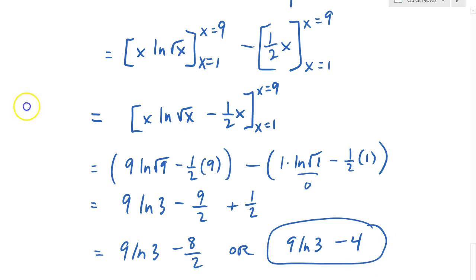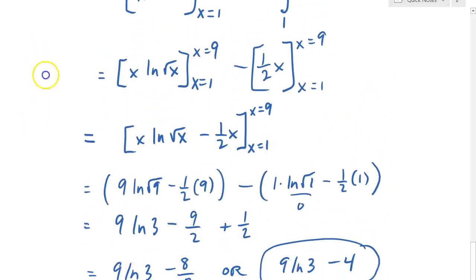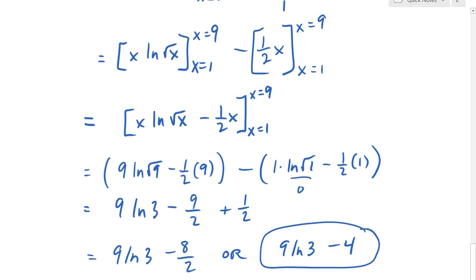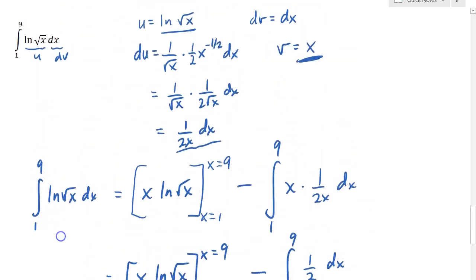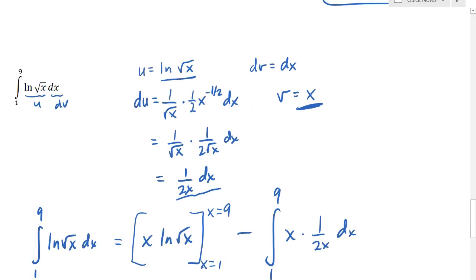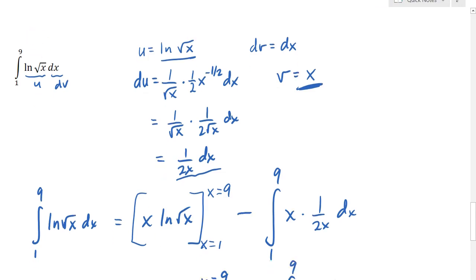To summarize: I showed a couple of examples where we had products but should not use integration by parts because better methods exist. When we do use integration by parts, you identify the four parts — u, dv, du, and v — and apply the formula. We saw three examples where applying this rule makes a lot of sense. I hope you found this helpful.